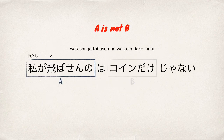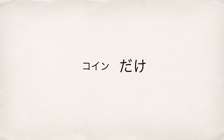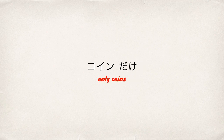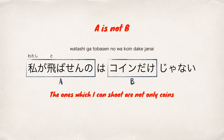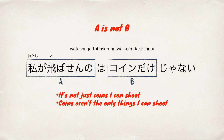私が飛ばせんの means 'the one which I can shoot.' Now let's look at B: コイン means 'coins,' and だけ means 'only,' so コインだけ means 'only coins.' So the whole sentence 私が飛ばせんのはコインだけじゃない, translated directly, means 'the ones which I can shoot are not only coins' — or 'it's not just coins I can shoot,' or 'coins aren't the only things I can shoot.'